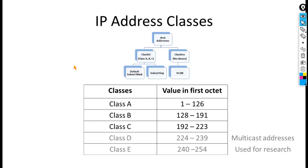IP version 4 addresses have five classes: Class A, B, C, D, and E. If the value of the first octet is between 1 and 126, the address is Class A. If the first octet is from 128 to 191, it is Class B. From 192 to 223 is Class C. From 224 to 239 is Class D, used for multicasting. From 242 to 254 is Class E, used for research purposes.